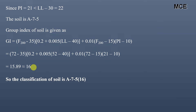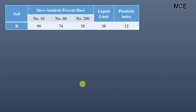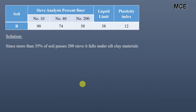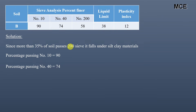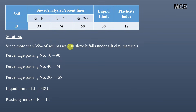The classification of soil A is A-7-5(16). For soil B, more than 35% — that is 58% — of the soil passes sieve number 200, so it falls under silt-clay materials. The percentage passing sieve number 10 is 90, sieve number 40 is 74, and sieve number 200 is 58. The liquid limit is 38 and the plasticity index is 12.